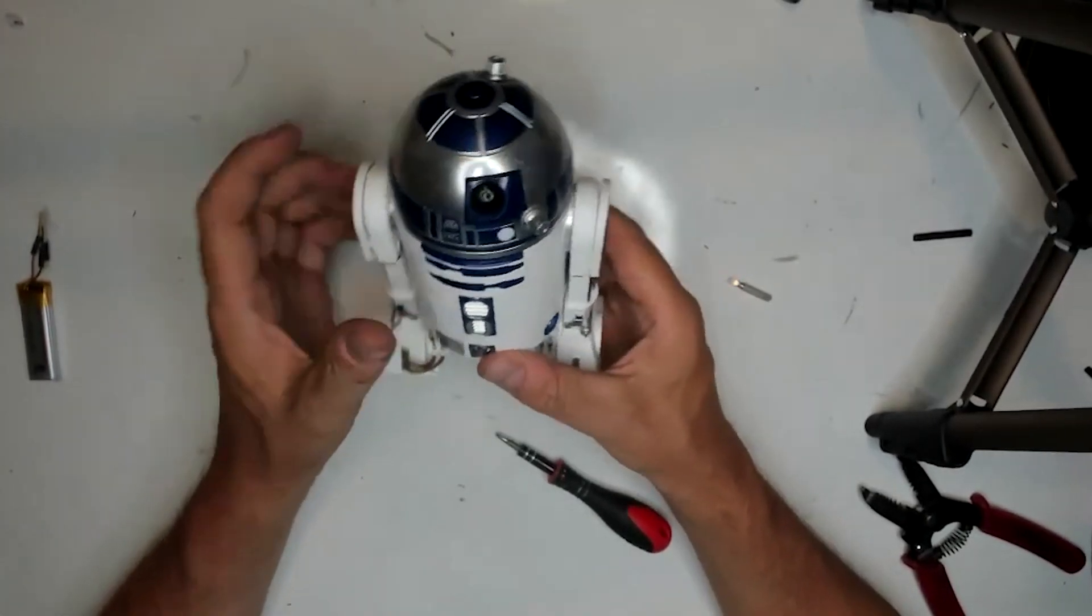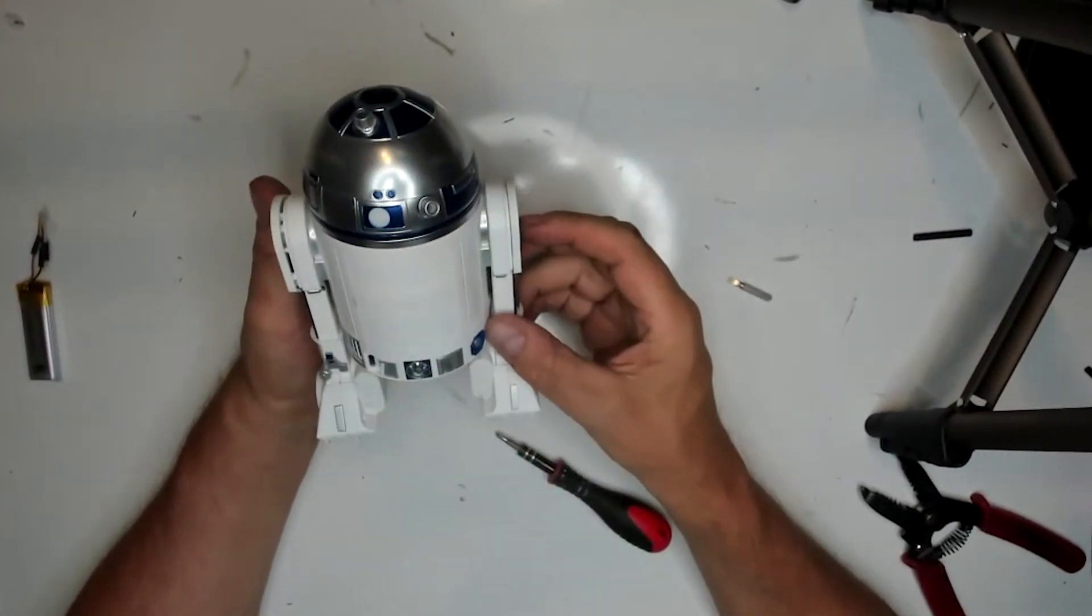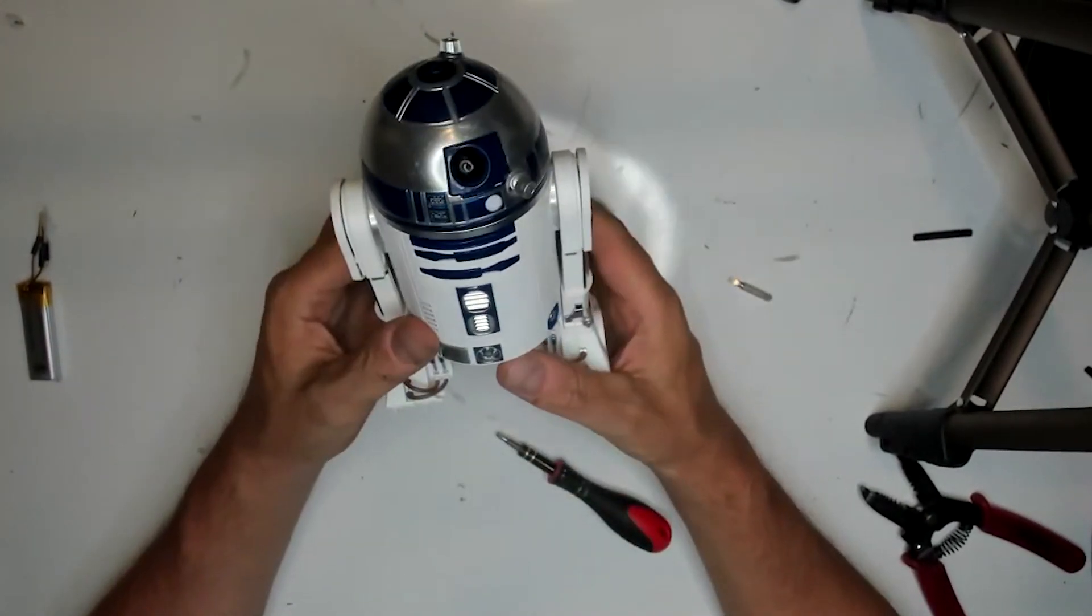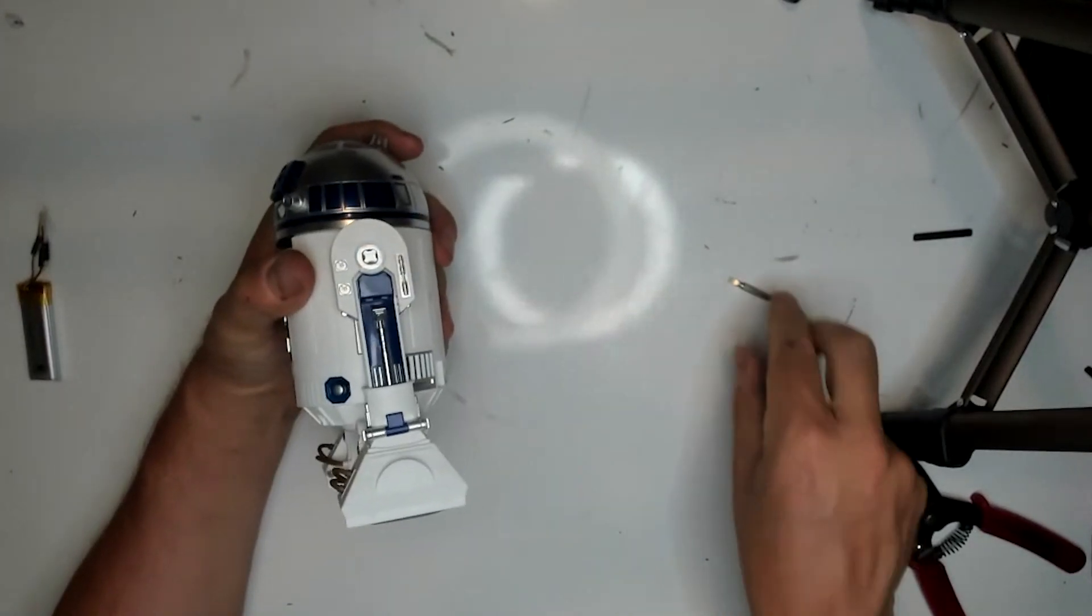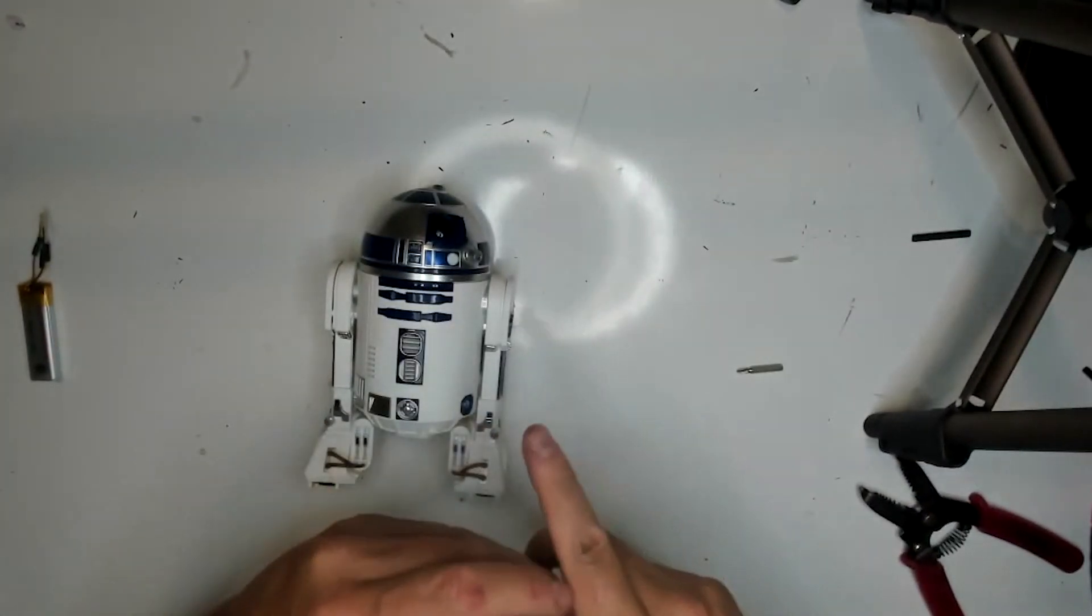Now it's time to perform surgery on R2 to get the back panel off to get the new battery installed. And usually start with the legs, but I don't know any other way to do it.